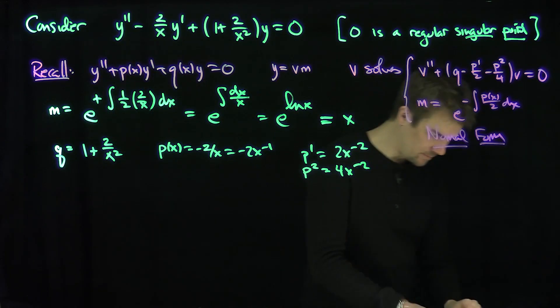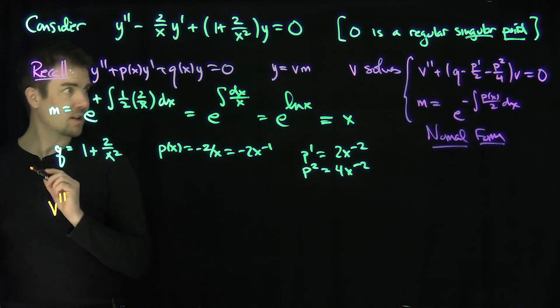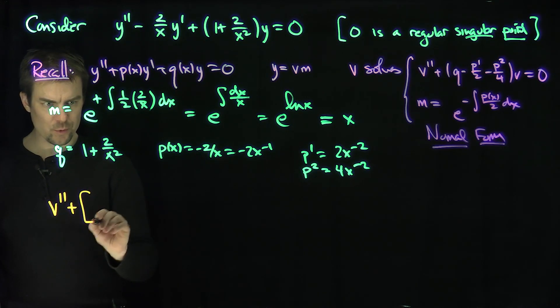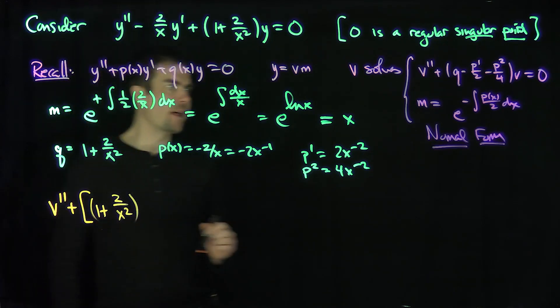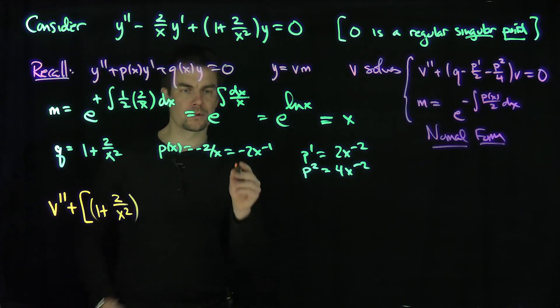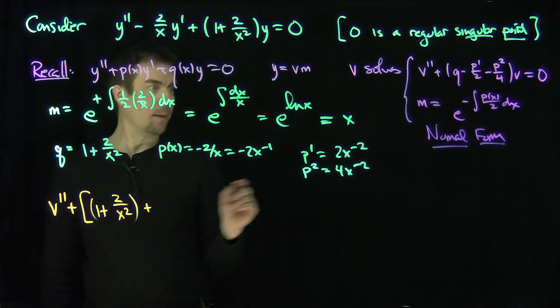Let's look at this quantity. My v equation is v'' + q - p'/2 - p²/4. So v'' + (1 + 2/x²) and then I need -p'/2.